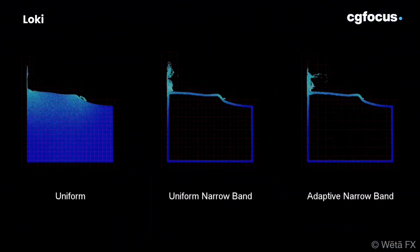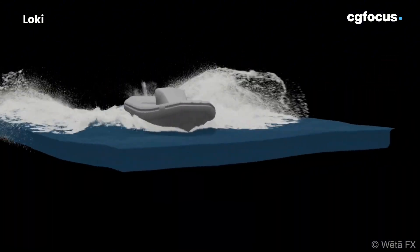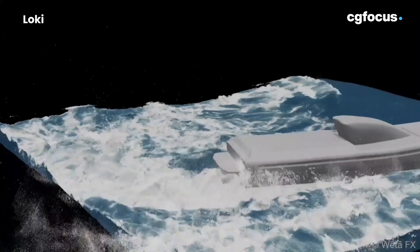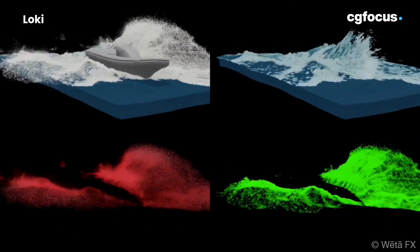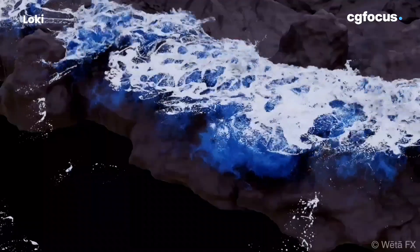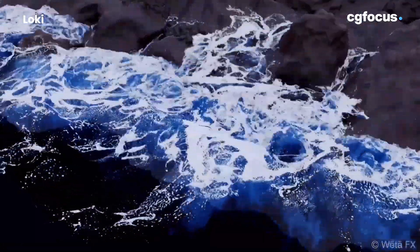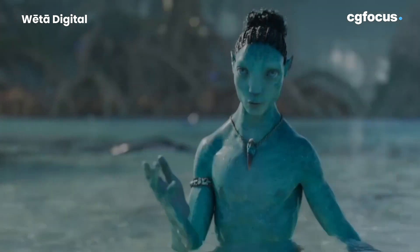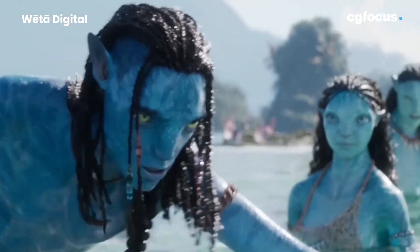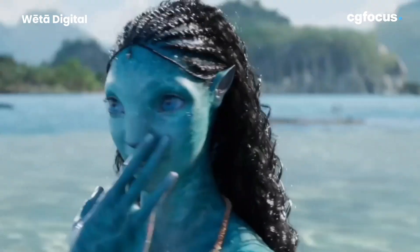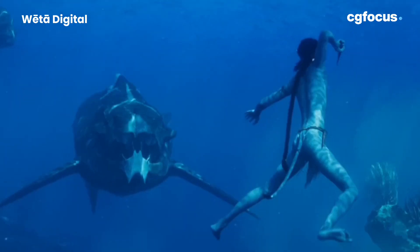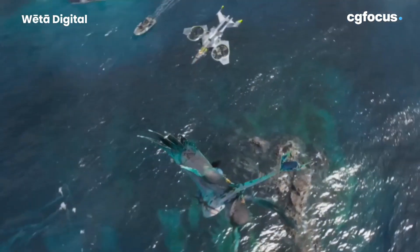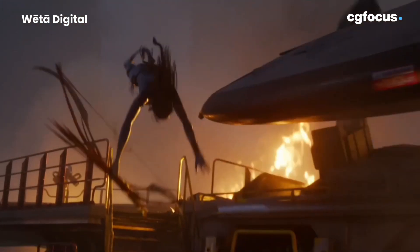Some scenes even featured water interacting with over 50 creatures in a single shot. This Loki water state machine was crucial for delivering the sheer volume of large-scale water shots in the film. Avatar: The Way of Water required water effects for 2,225 shots, some taking up to eight days of simulation to achieve the high resolution needed. Some complex water scenes even took weeks to render, with one specific scene taking two weeks just to simulate the water movement alone, before even factoring in rendering time.